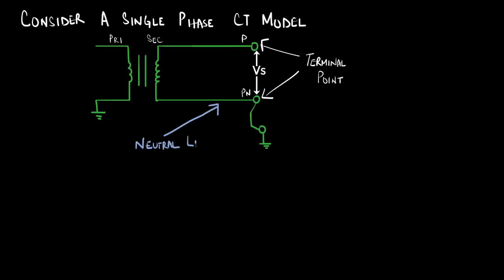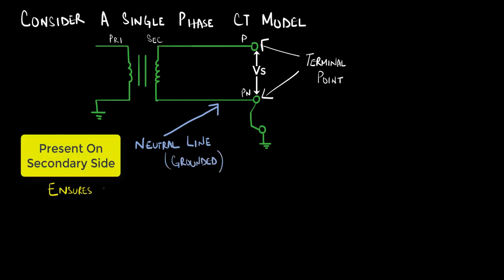In order to understand how grounding works, let us consider a single phase CT model. For a single phase CT, we shall ground the neutral wire present on the secondary side. This ensures adequate protection of the secondary side equipment.